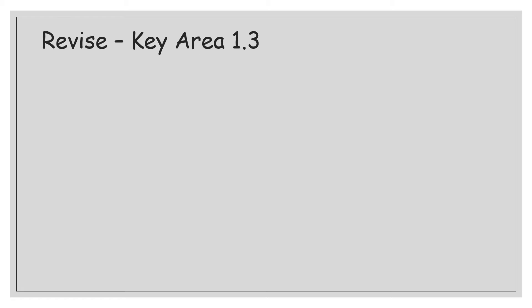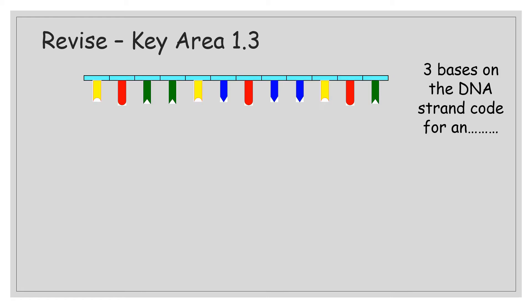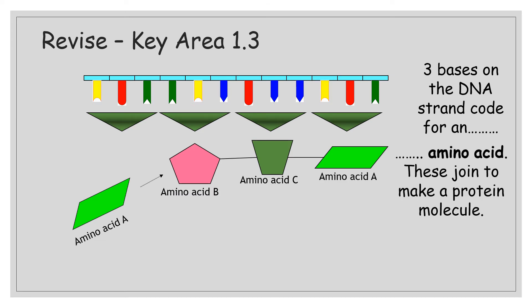Mutations, variation, adaptation — those are three words you'll have heard before. Before we go on to that, I just want to have a quick recap on Key Area 1.3, because if we're going to learn about mutations, we need to make sure we understand where those mutations could happen. So we're going to look back at DNA. Three bases on the DNA strand code for an amino acid.